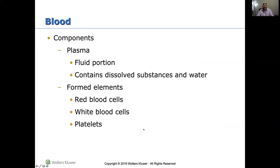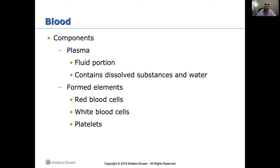Red blood cells help get oxygen where it needs to go in the body. White blood cells deal greatly with fending off illness. Platelets are what help blood clot. That's the general function of the formed elements in the blood.